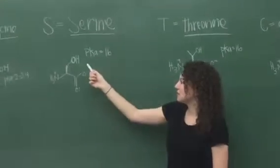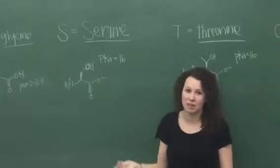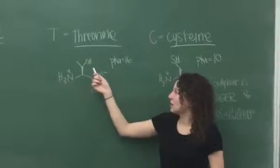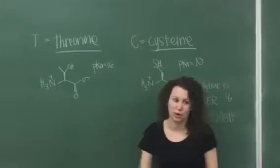Serine has a pKa of 16. This group is what we're talking about, and that looks like water. That's the one we've memorized throughout the semester. Same thing with threonine. It has a pKa of 16. It looks like water.